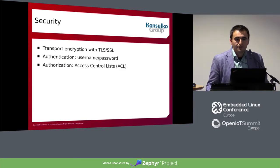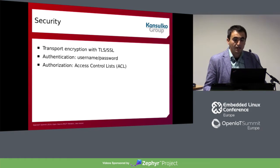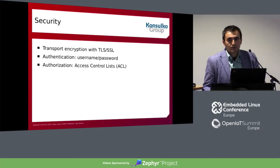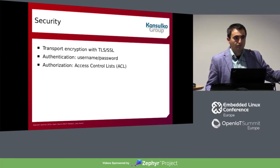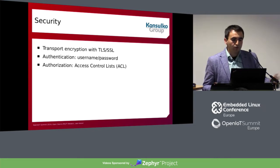There is an old joke saying the S in IoT stands for security. Security is a big thing for Internet of Things, and MQTT offers security on several aspects. The first is transport encryption with SSL. You can have authentication when clients connect to the broker with username and password. You also have access control lists, because sometimes multiple clients belong to different physical persons and you want to prevent message interception between users.